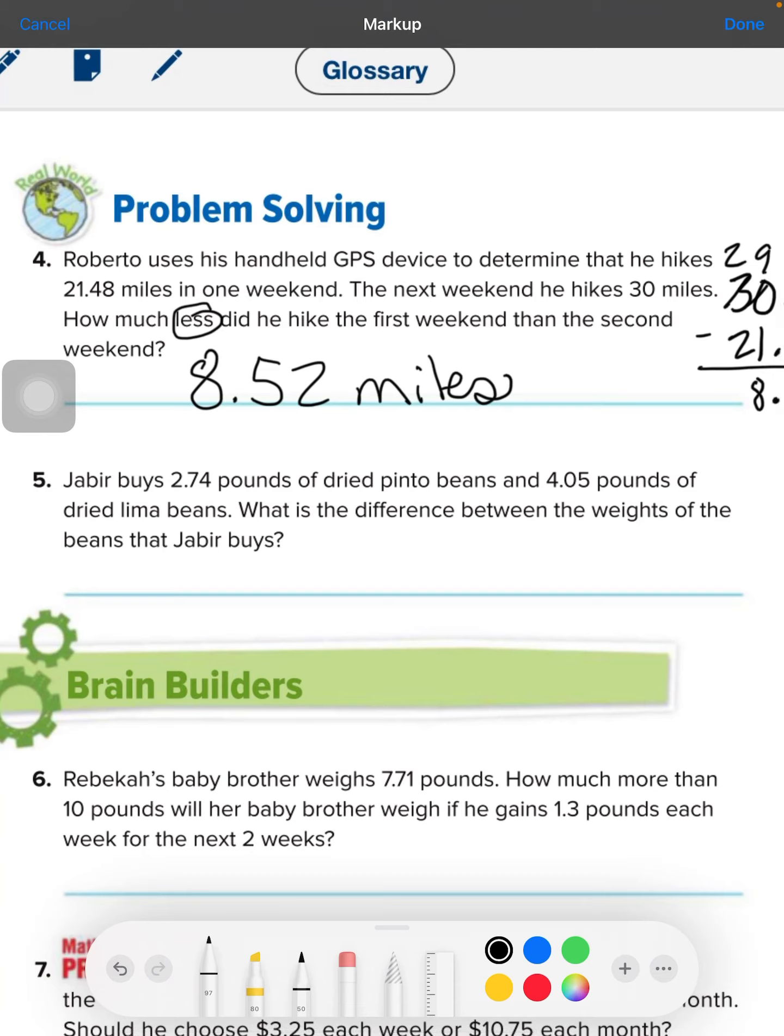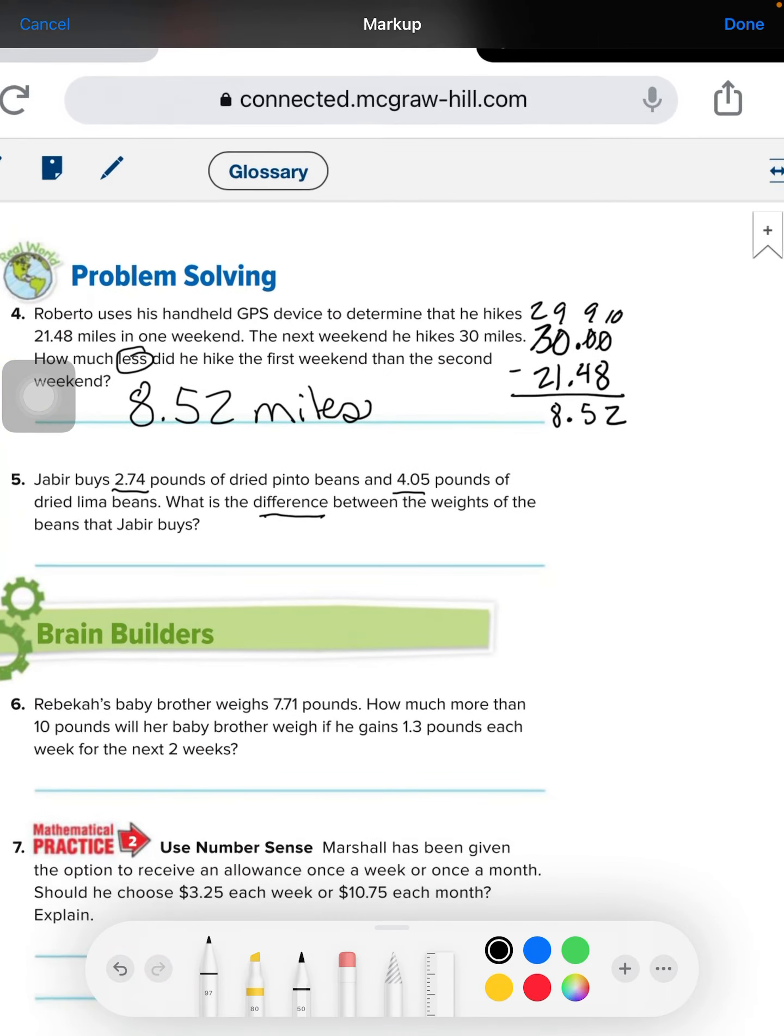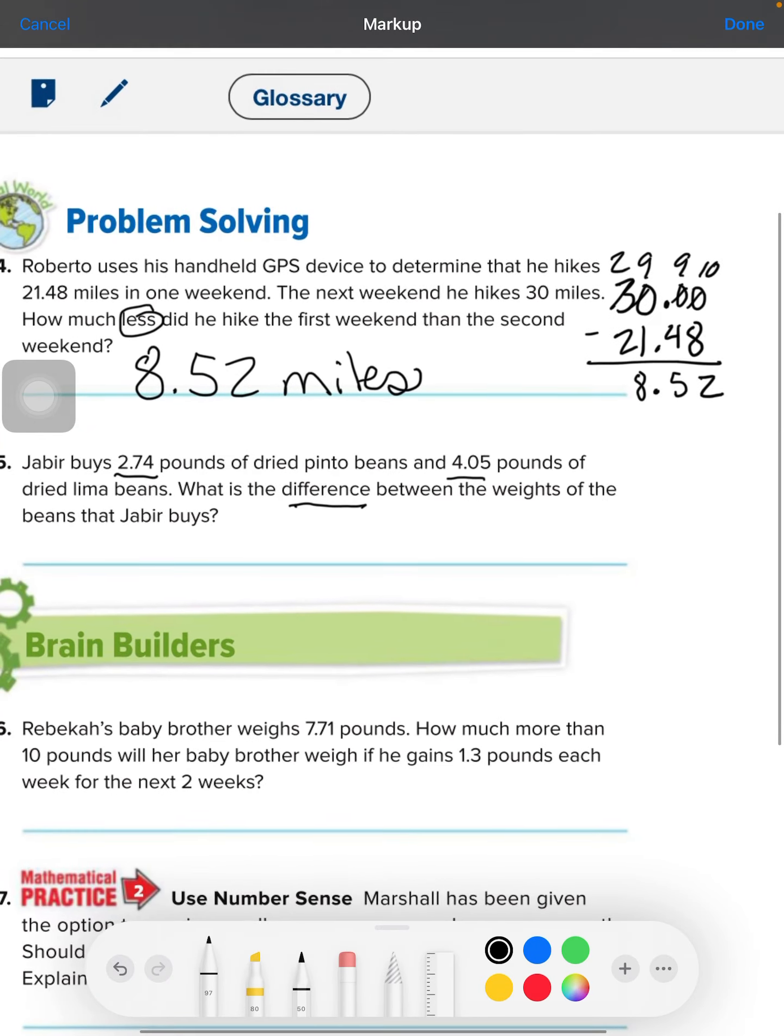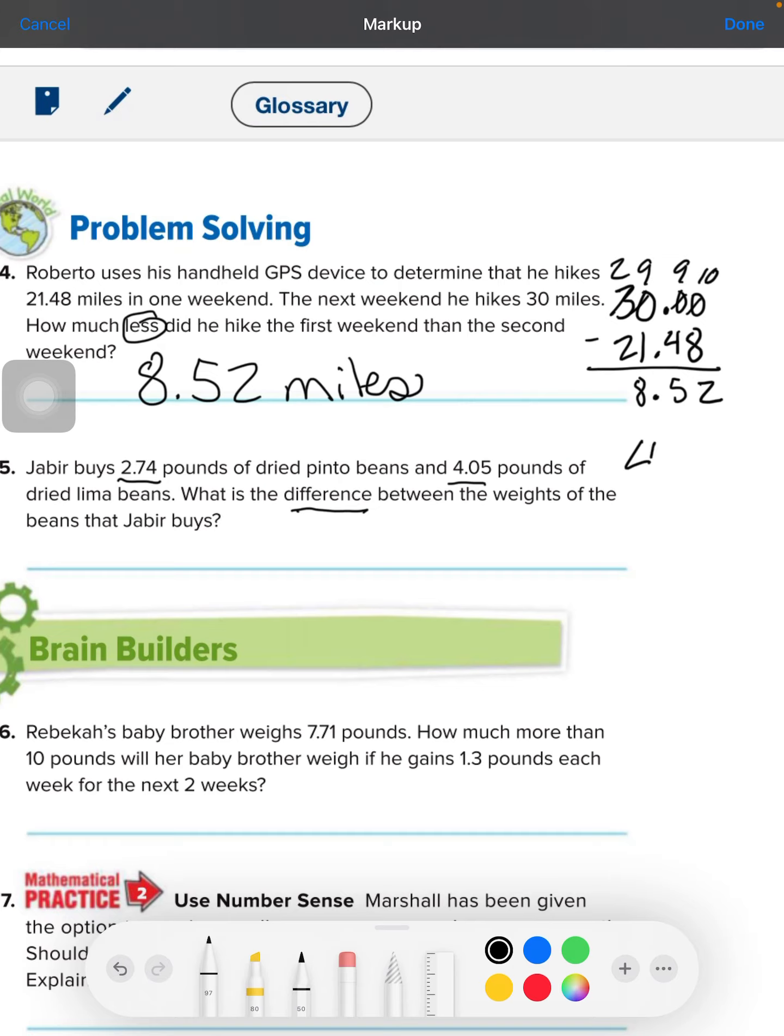Number 5. Jabbar buys 2.74 pounds of dry pinto beans and 4.05 pounds of dry lima beans. What is the difference between the weights that the beans that Jabbar buys? So, if you're wondering what to put on top, always look for the bigger number. 4, 0, 5. And then you line up the decimals.